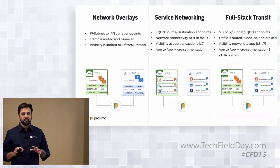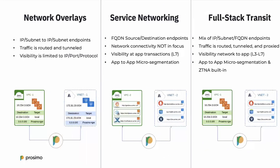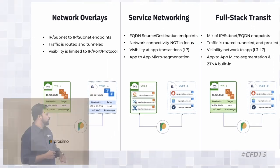Broadly, there are three categories of design patterns or challenges we've seen with customer deployments. Number one is setting up networking overlays. Customers have deployed multiple VPCs, multiple VNets. They have VCNs in Oracle Cloud, IP subnets — all of them. They need connectivity that can scale in any cloud, in any environment, even within a single cloud across multiple regions. So basic IP-to-IP routed layer connectivity is what they want.